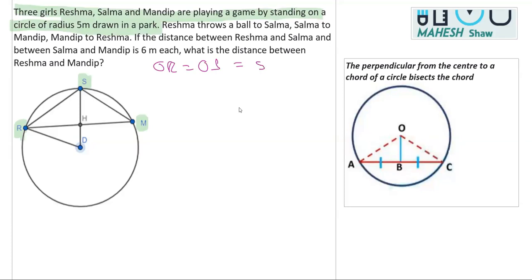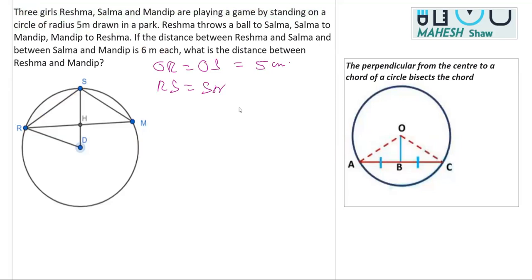The radius is given as 5 centimeters. Further, it says they are at equal distances, so RS equals SM, and that distance is 6 centimeters. Now we have to find the length of RM — that is, what is the distance between Reshma and Mandeep?